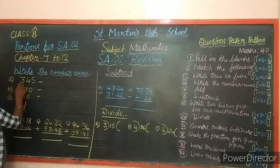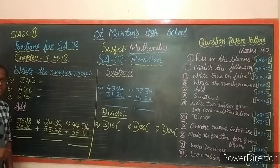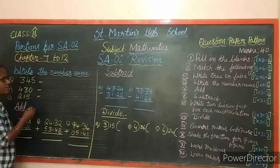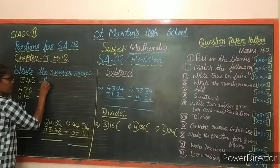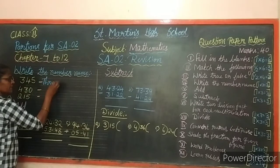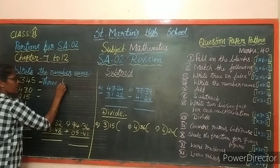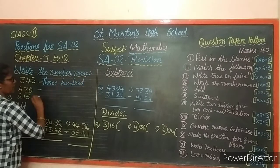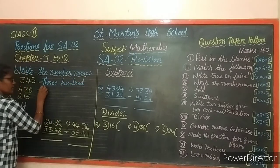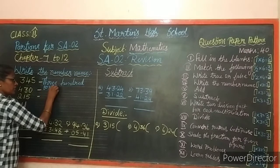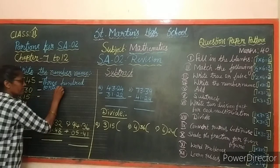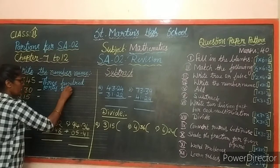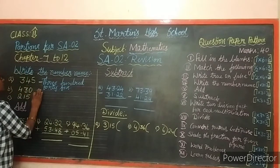First number is 345. We write from the hundreds column: 300 is three hundred, and 45 is forty-five. So 345 is written as Three Hundred and Forty-Five.